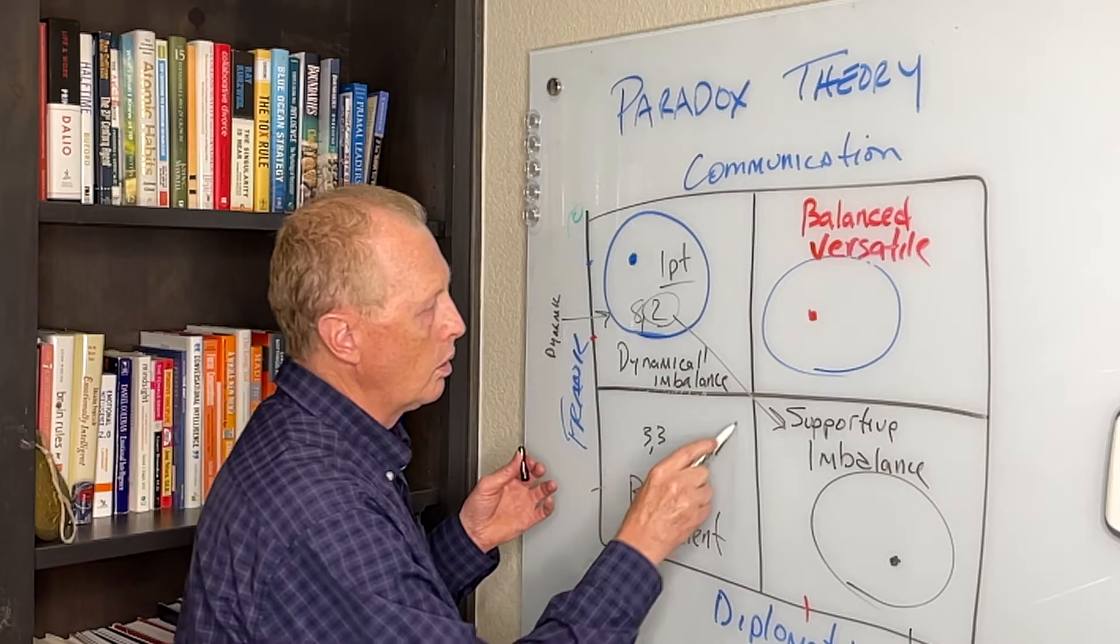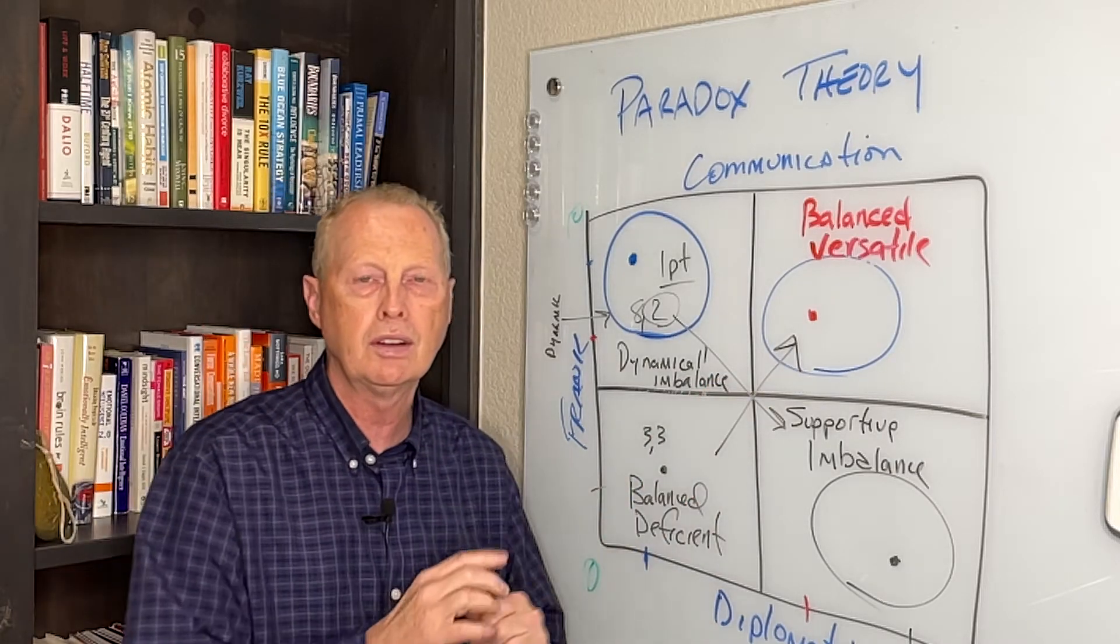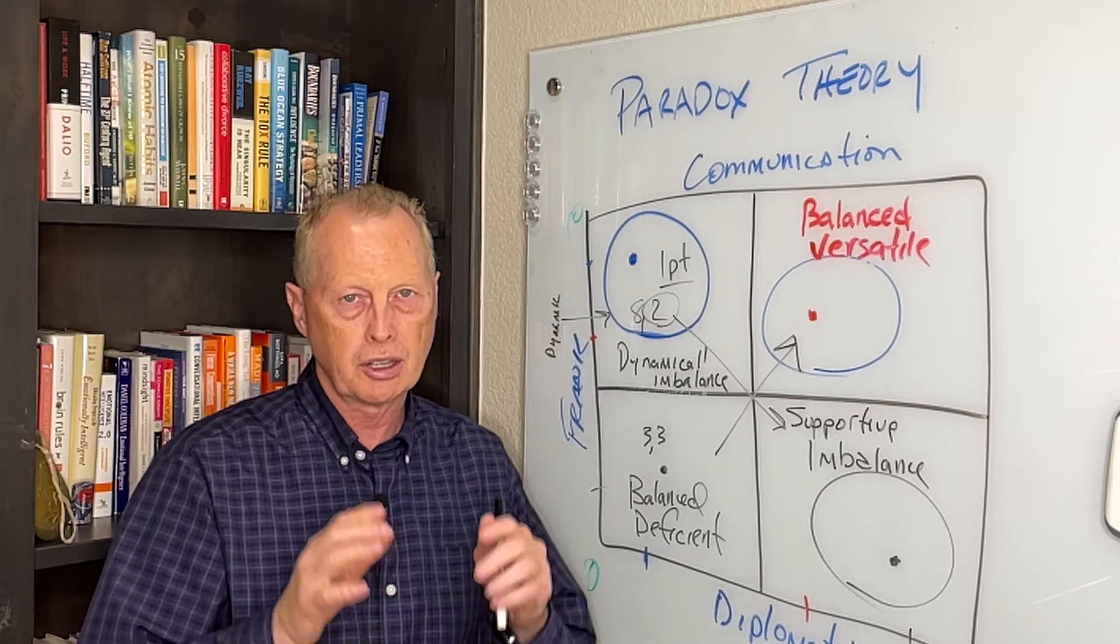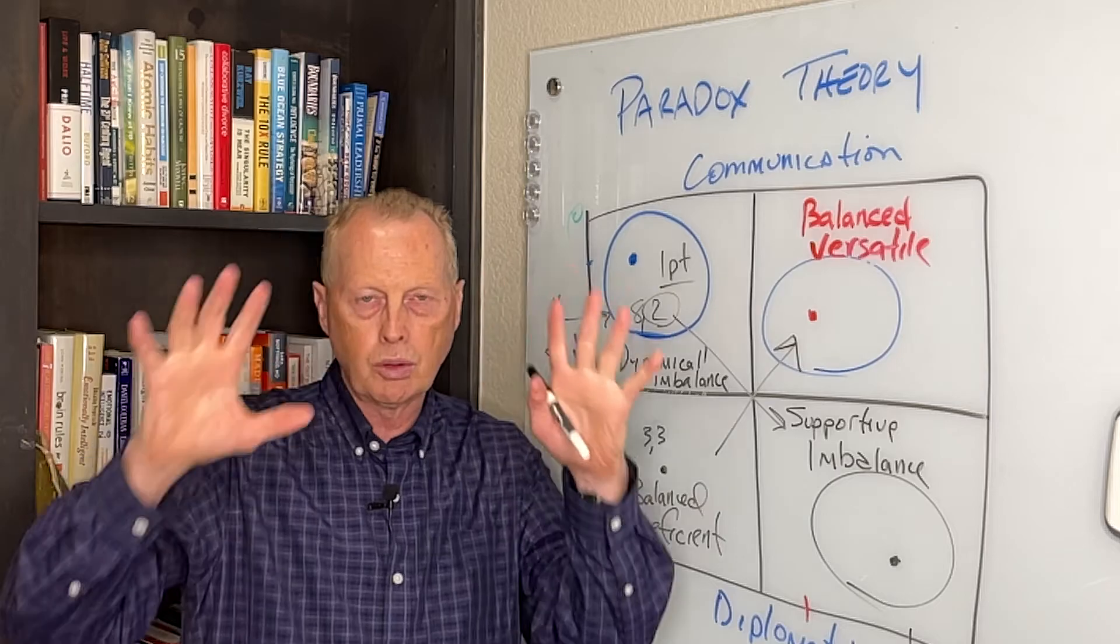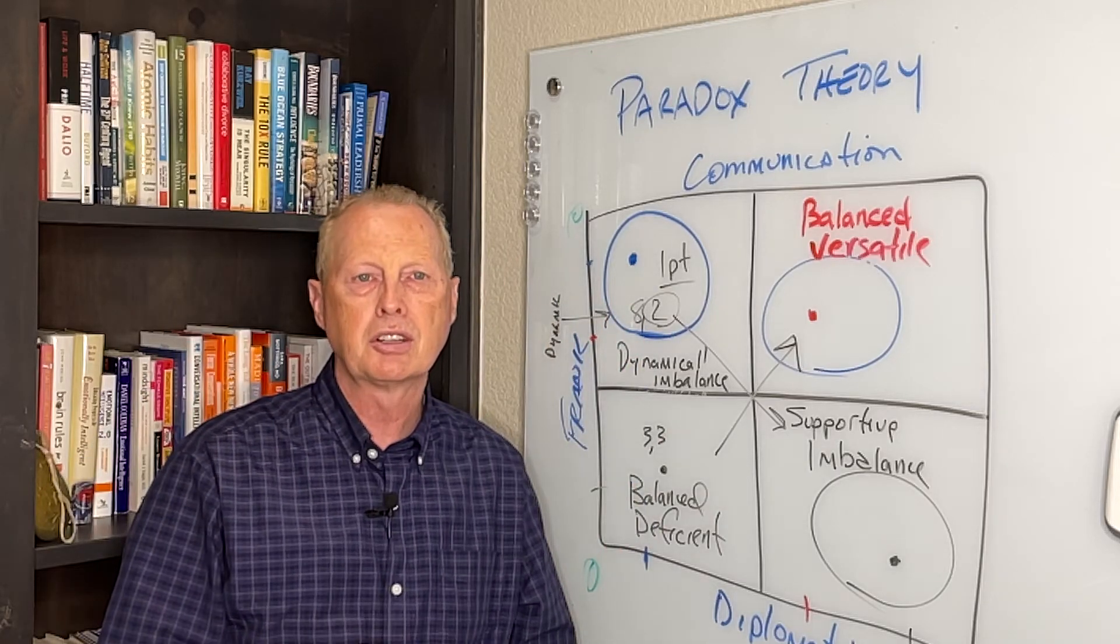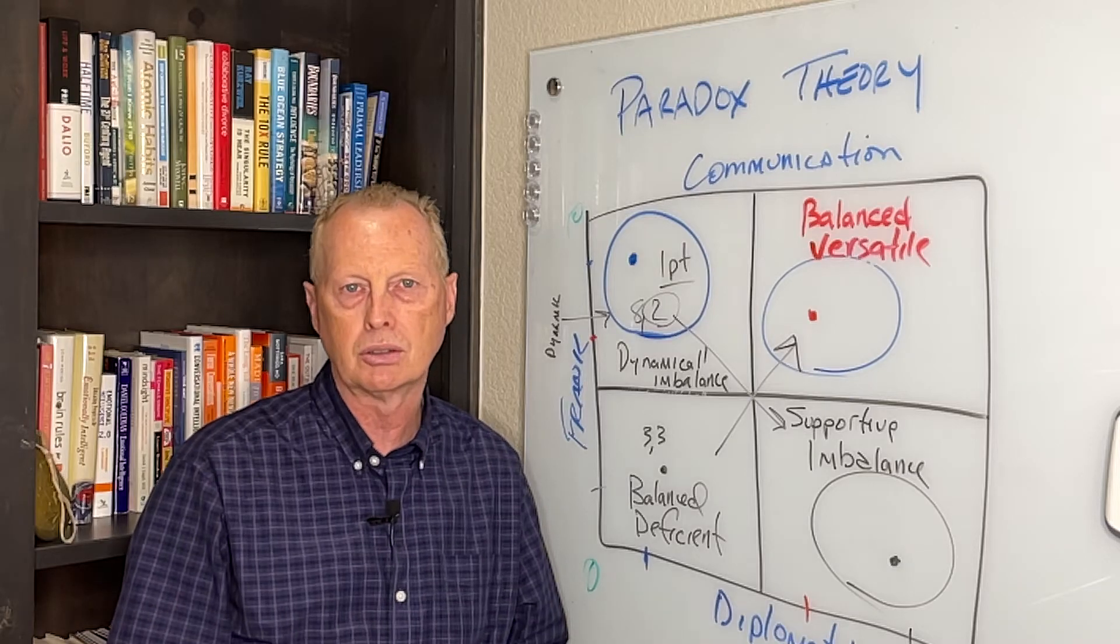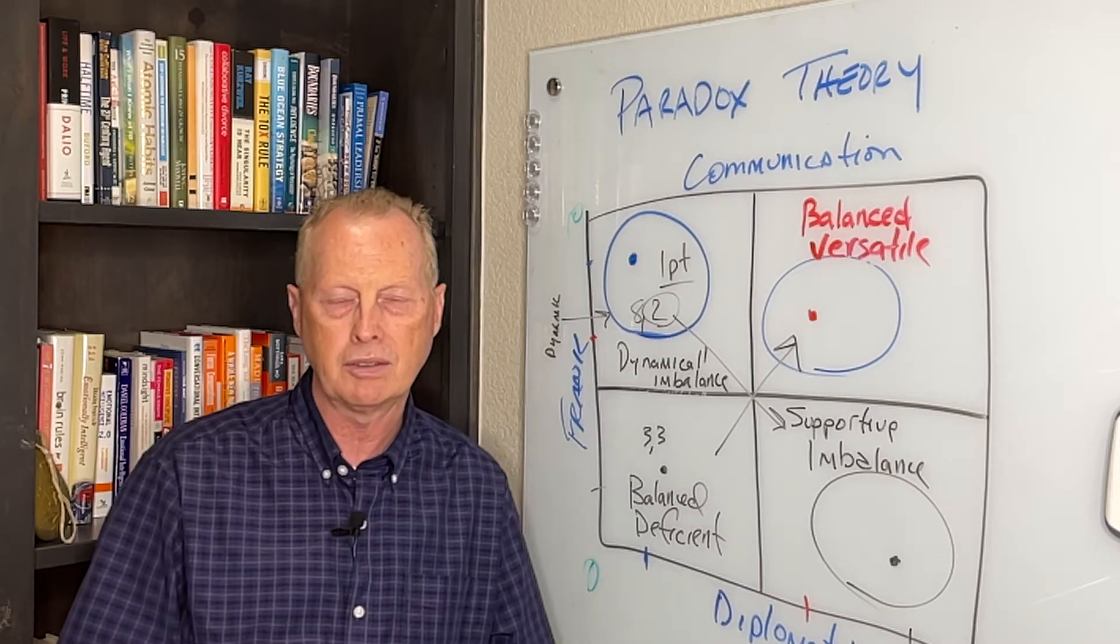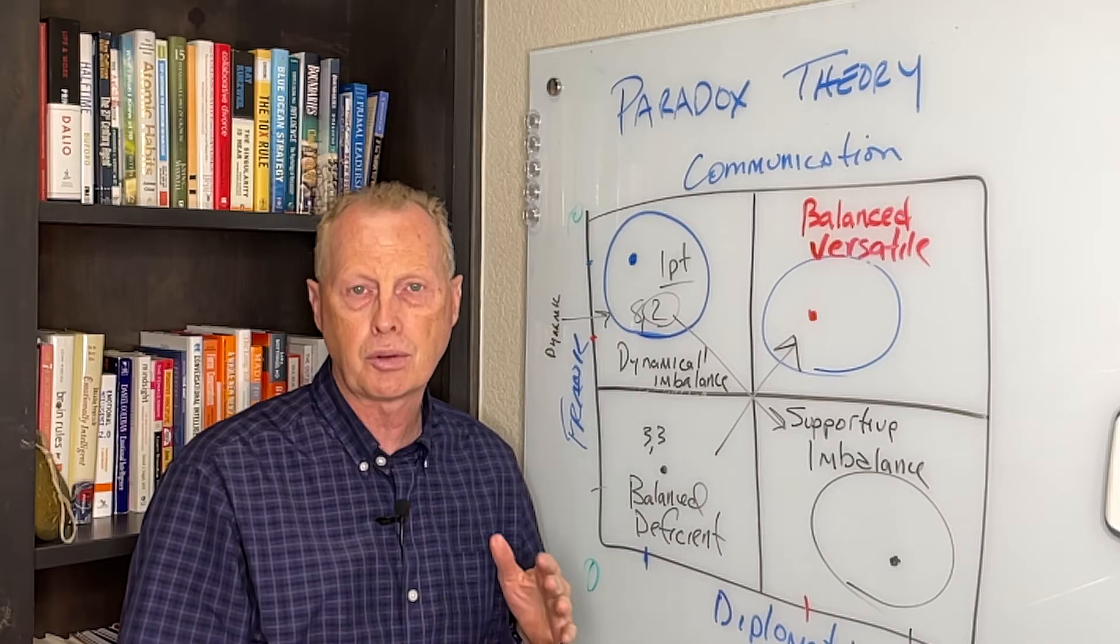Again, what we're doing is we're working toward being balanced and there are 12 of these paradoxes. You're going to have one page in there that's going to be all 12 graphs and then there's going to be an independent page for each single paradoxical behavior or set of behaviors. So that's how the paradox theory works and that's how the graphs are read.